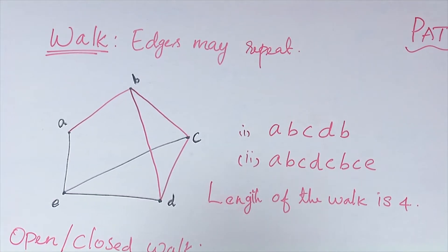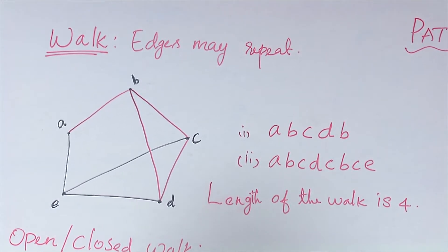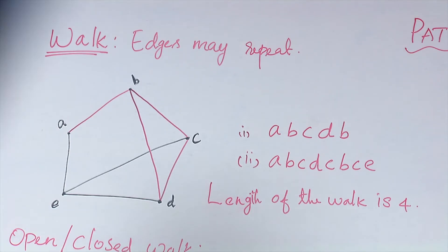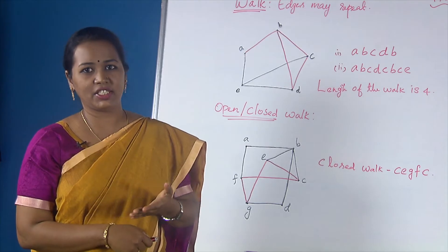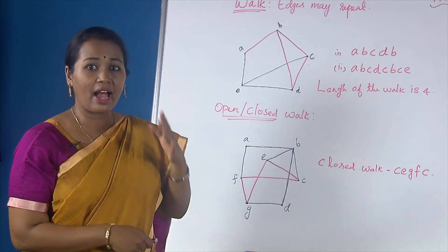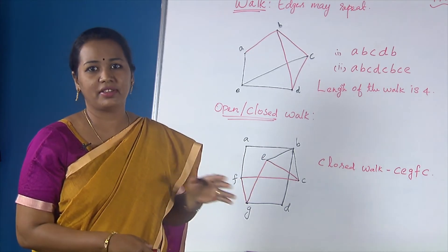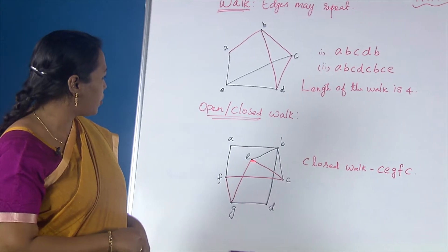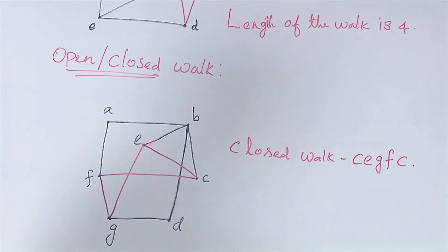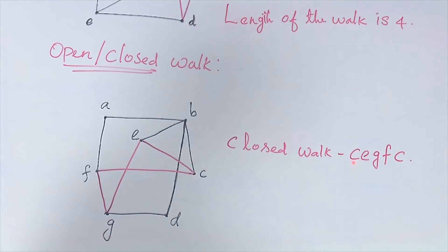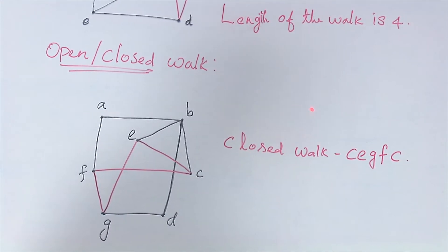Let us see an example of open and closed walk. An open walk is when the starting vertex and the end vertex are not the same — you start at one point and reach somewhere else. But a closed walk is when the starting point and the ending point are the same. An example: the closed walk CE, EG, GF, FC starts at C and ends at C, and therefore this is an example of a closed walk.